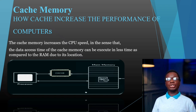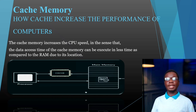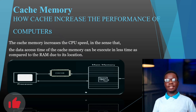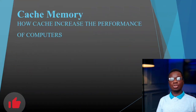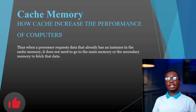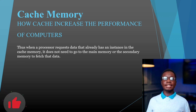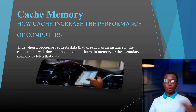Instead of the CPU going to fetch data directly from the RAM, it will first check the cache memory. Even the word 'cache' really means hidden — we don't often hear about cache memory because it's hidden. It stores information that was recently or frequently executed by the CPU.